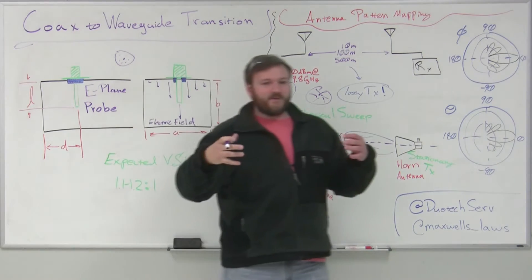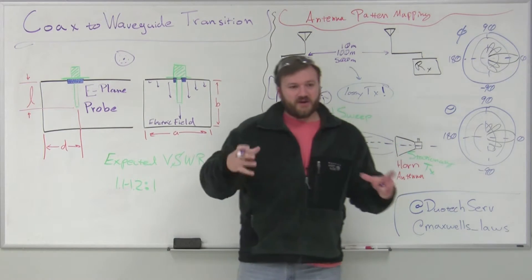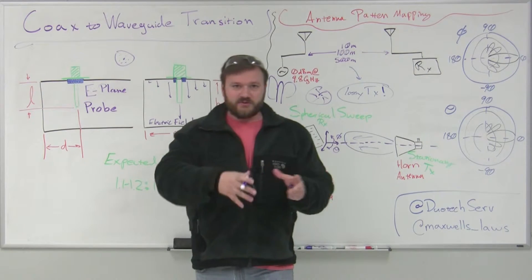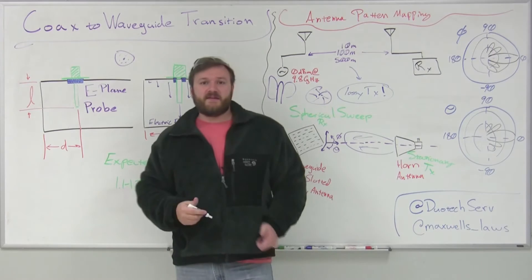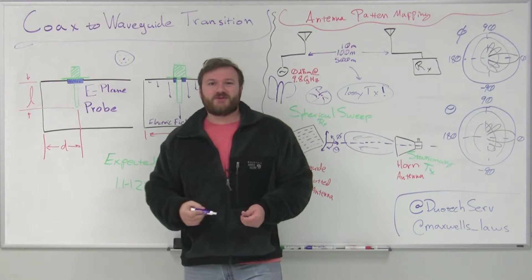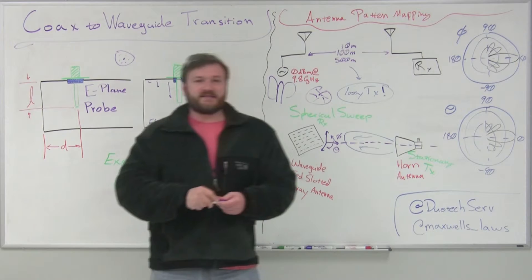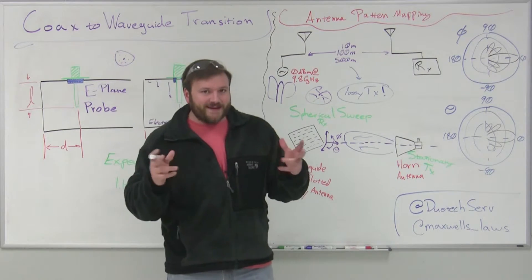That's what we think of like an isotropic radiator. We think of a radiator or receiver whose pattern is equal in three space. That's what we're measuring it relative to. So you'll see this unit called DBI that's relating to the isotropic antenna.